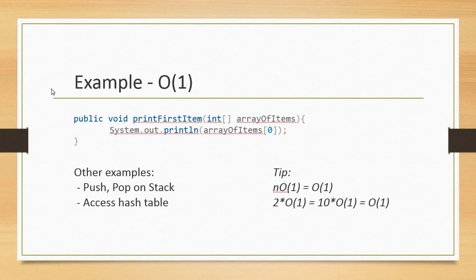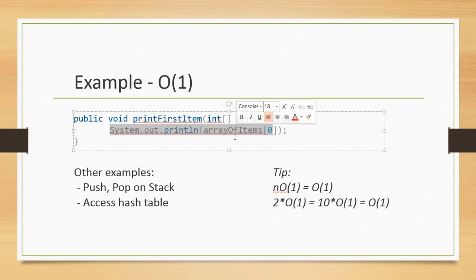So here is an example of O(1). Let's say you have a given array and you're just accessing one index of your array. In this case, no matter how many items you have in the array, you're just accessing one index. It takes just once, so it's O(1).